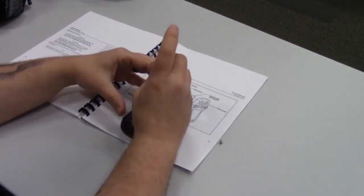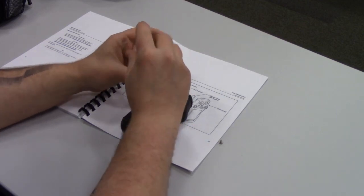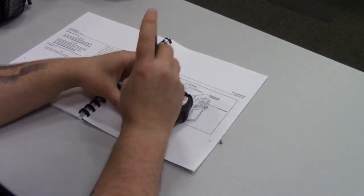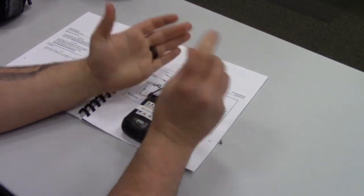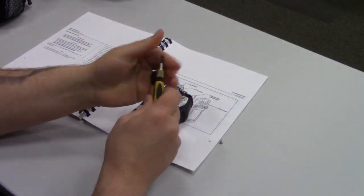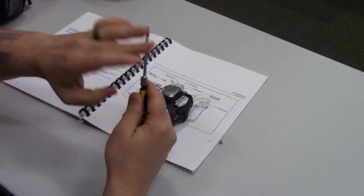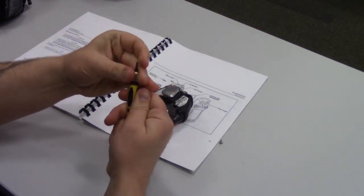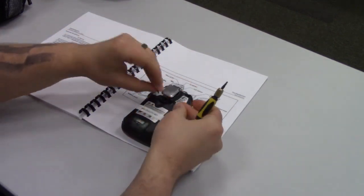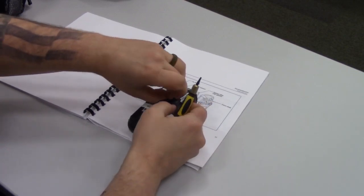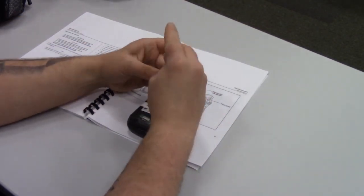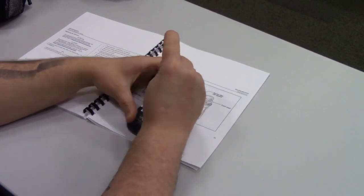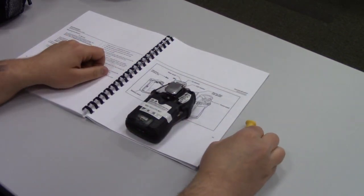Now the manual says to use three to four inch-pounds of torque. I don't have a torque wrench that small, so I just go to hand tight. Flip it right back around to the hex head, screw right there in the back of the tab, and just tighten it on up.